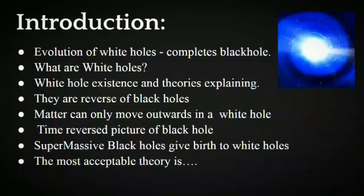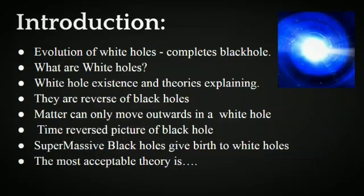Black holes are incomplete. The evolution of white holes from black holes provides a complete picture to black holes. White holes are hypothetical astrophysical objects predicted as part of the solution to Einstein's field equations. Their existence is still not confirmed and currently we have many theories explaining the existence and the geometry of these mysterious objects. They are thought to be the reverse of black holes in almost all aspects. Matter can only move outwards in a white hole — it can be thought of as a time-reverse picture of the black hole.